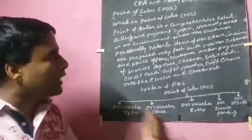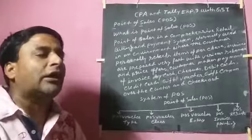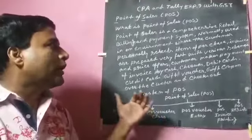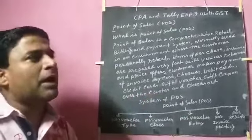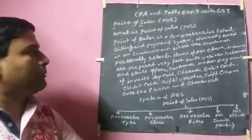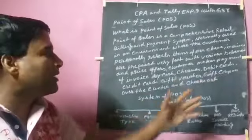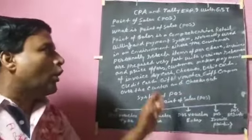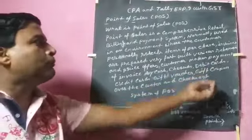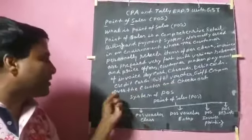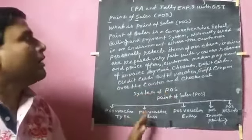We personally select which item we want to buy, and we have a choice of payment as well. We can pay in cash, by check payment, debit card, credit card. When we have a gift voucher or coupon, we can adjust that over the counter at checkout. This is what Point of Sale means.